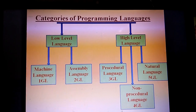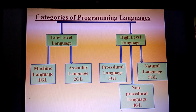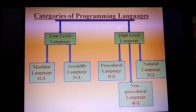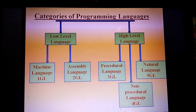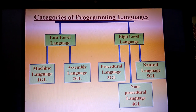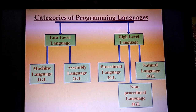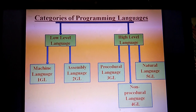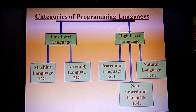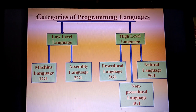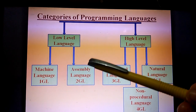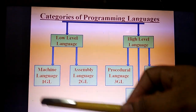The next topic is Categories of Programming Languages. Programming languages are divided into two parts: the first is low level language and the second is high level language. Low level language is further divided into two parts — the first is machine language, also called the first generation language, and the second is assembly language, also called the second generation language.